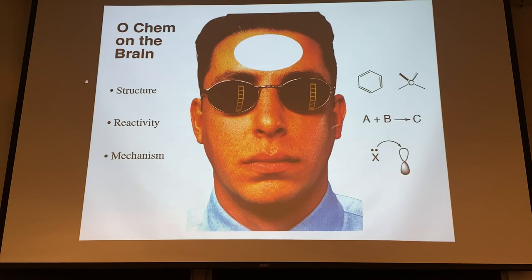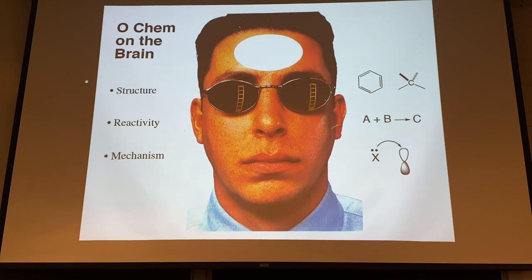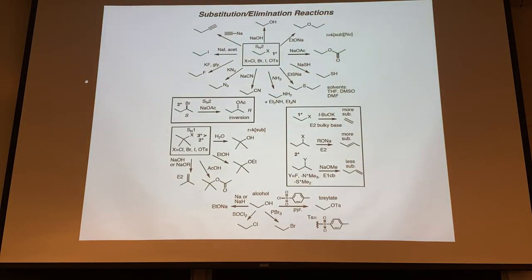Don't just memorize reactions - relate them to the principles of structure and properties. Third: mechanism - pushing electrons, moving pairs of electrons to form reactive intermediates. We'll mainly look at electrophilic substitution: an electron-deficient, partially positive reagent will draw electrons from a pi bond or benzene ring to attack the electrophile. Keep all three levels straight: structure, reactivity, and mechanism.